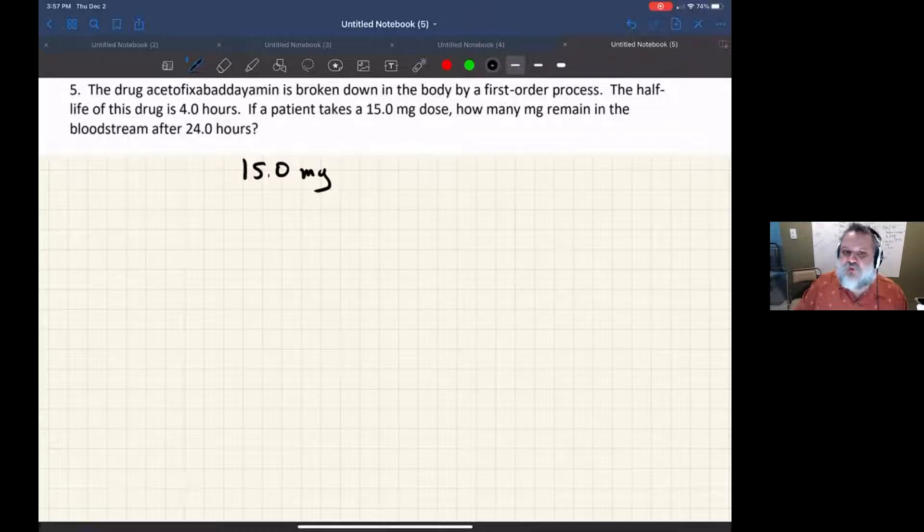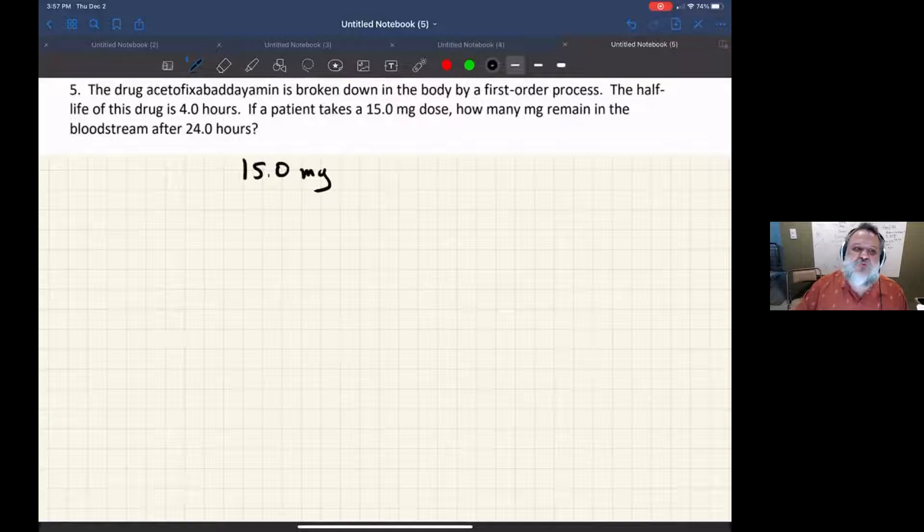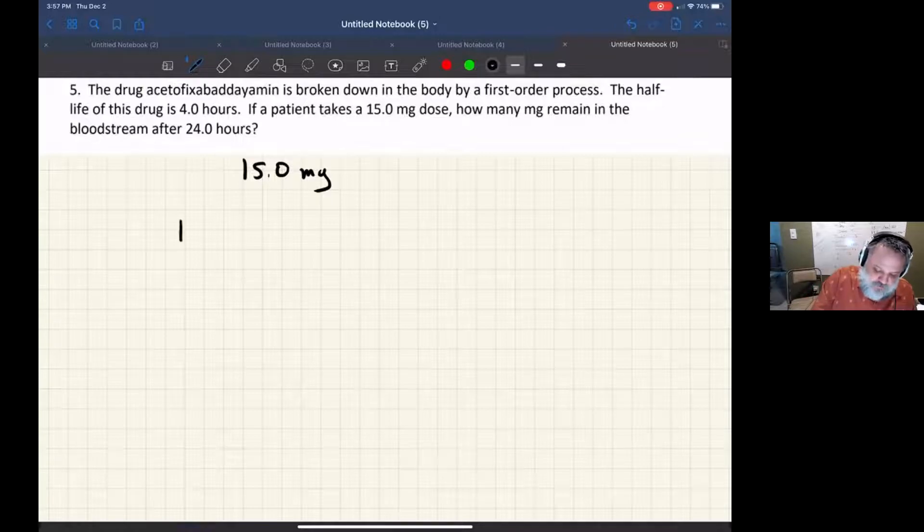It's important to be able to get a qualitative sense of what's going on with the half-life, because sometimes that can really lead to the answers that you're looking for. Certainly, you could use the integrated rate law in order to figure this out, but if you take a look, 24 is an even multiple of the half-life. What does the half-life mean?